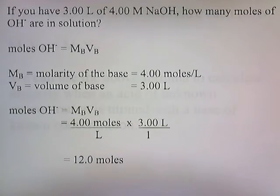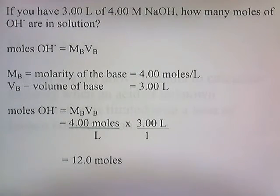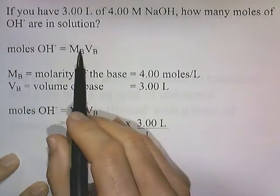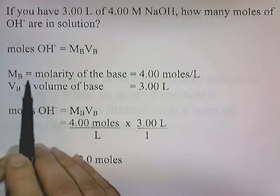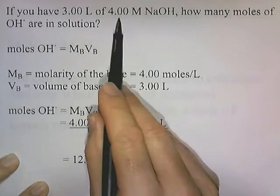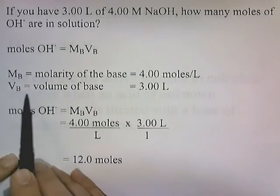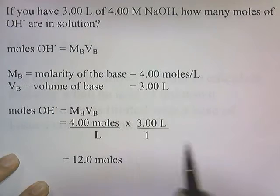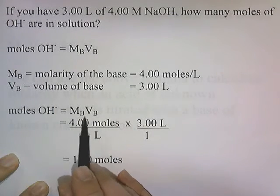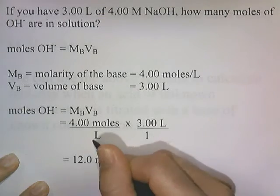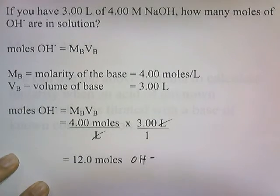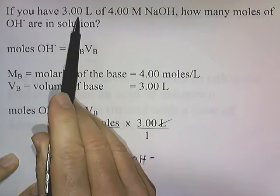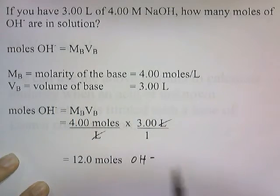If you have 3 liters of 4-molar sodium hydroxide, how many moles of hydroxide are in solution? It's a similar process. The moles of hydroxide equals the molarity of the base times the volume of the base. Mb is 4 moles per liter, and Vb is 3 liters. So 4 times 3 — the liters cancel — leaves us with 12 moles of hydroxide.